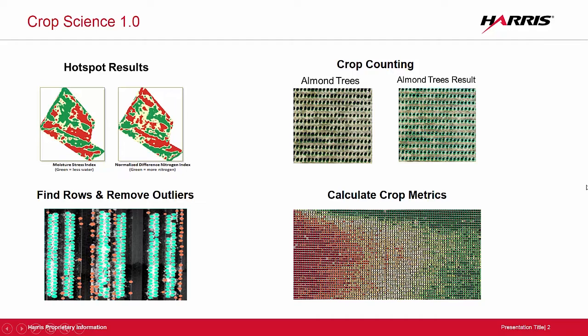In our first release of Envy Crop Science, we focus on locating and deriving statistics at an individual plant level for a single point in time. This enables users to monitor the health of individual plants, to more accurately model crop yield, and to easily perform on-site research. This included tools to find hotspots in your field, count crops at an individual level with high accuracy, and calculate the metrics of your crops to find the health of individual crops or just the overall health of your field.